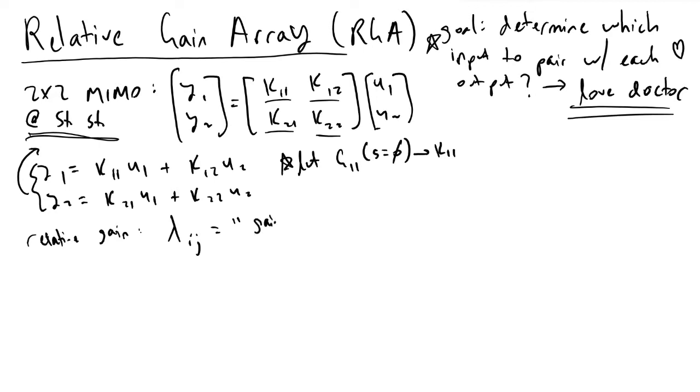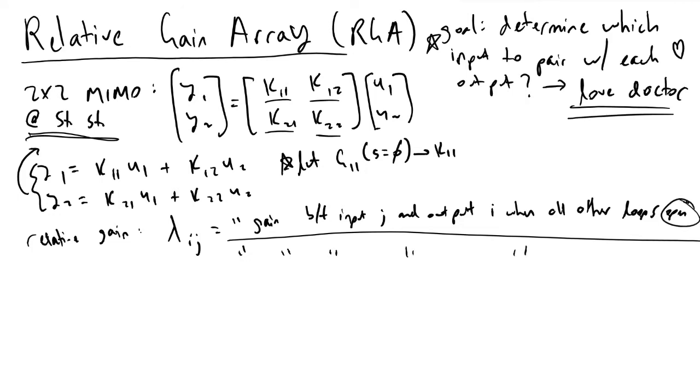It tells us the gain between input j and output i when all other loops are open, divided by the gain between input j and output i when all the other loops are closed. Essentially, what it means is we will hold all other inputs constant and we hold all other outputs constant.